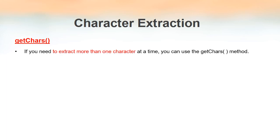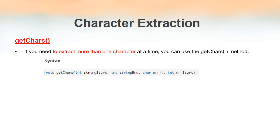The charAt method is used to extract a single character. But if we need to extract more than one character at a time, we use the getChars method. The syntax is: void getChars(int stringStart, int stringEnd, char[] array, int arrayStart). It has four parameters and its return type is void, meaning it does not return anything. The first two parameters indicate the start and end index numbers of the characters to extract.